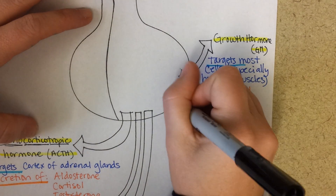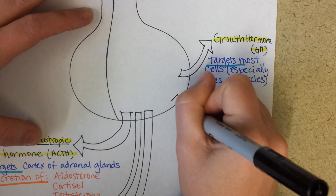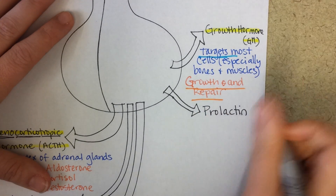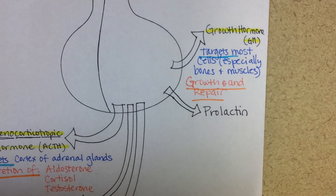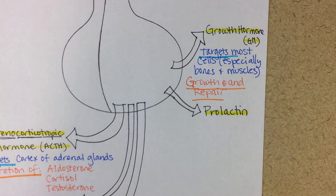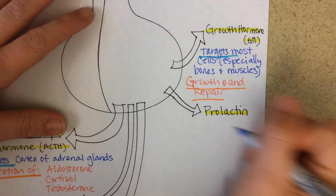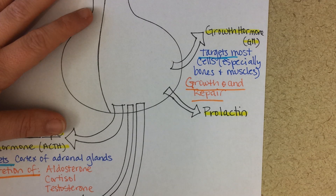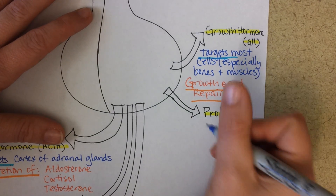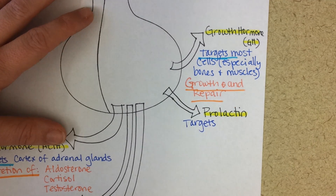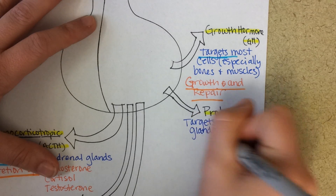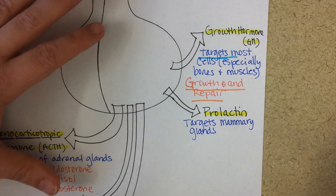Next up is prolactin. You can see 'lact' in there, like lactation, and sure enough this hormone is important for milk production in females. It is produced in men as well, though not very much, and not all of its functions are fully understood. It is possible with a hormonal imbalance for a man to lactate, although it is not common. Prolactin targets the mammary glands and causes milk production.